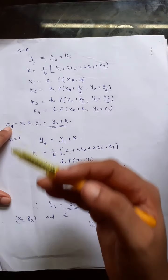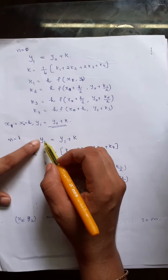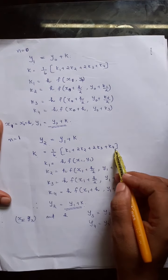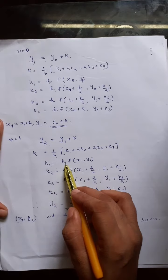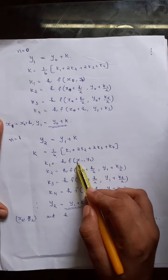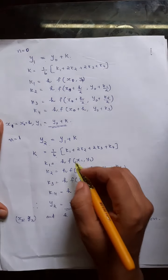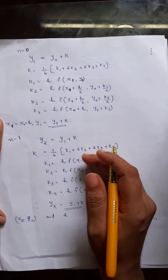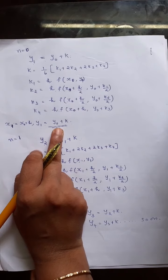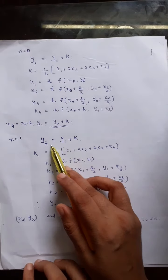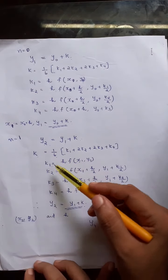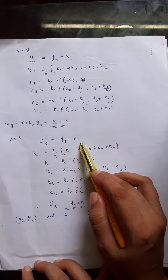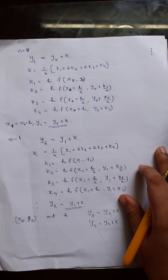Once you have x1 and y1, you can move to the next step. To find y2, you use y2 = y1 + k, where k is again (1/6)(k1 + 2k2 + 2k3 + k4), but now k1 is computed using x1 and y1. So you step one unit forward, replacing x0, y0 with x1, y1. Similarly, you can find y3, y4, and so on.